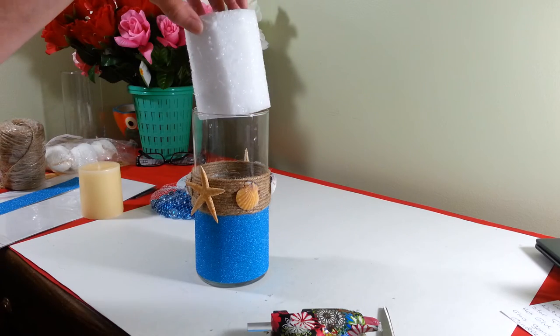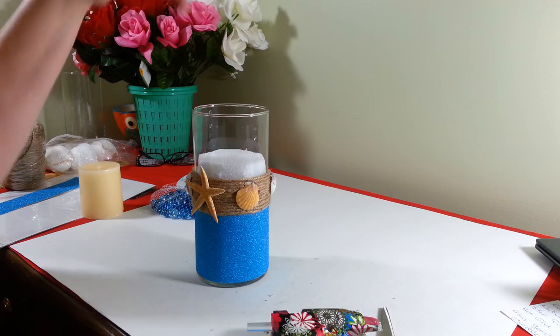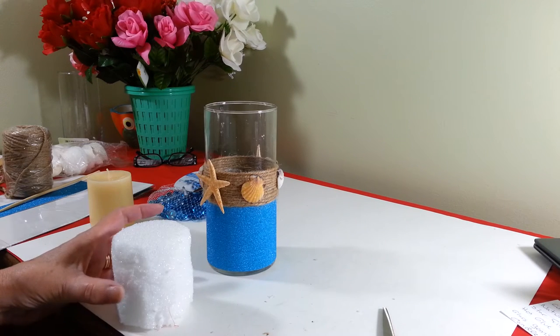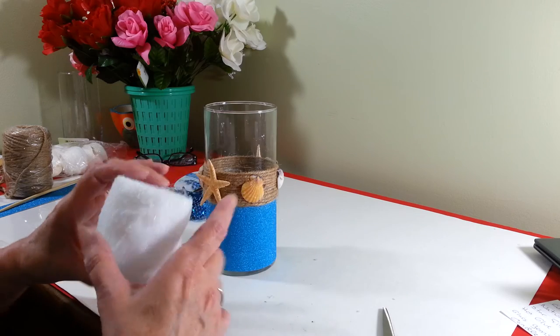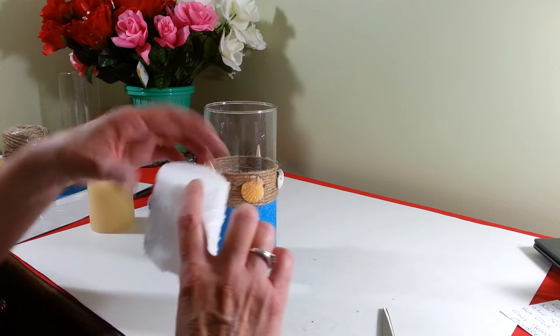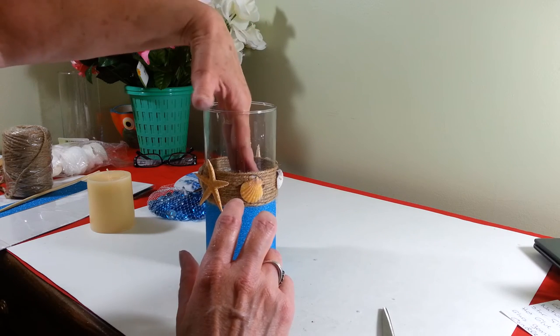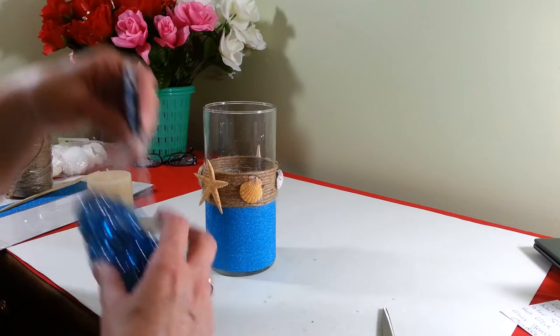So now I'm going to insert my styrofoam. No, I'm not because it's too big. Okay, hold up. Now we want to insert our styrofoam block. I cut this down to three inches tall. And then I just trimmed it off until it fit in there nicely. This is just to really take up some space so you don't have to use a ton of these gems.